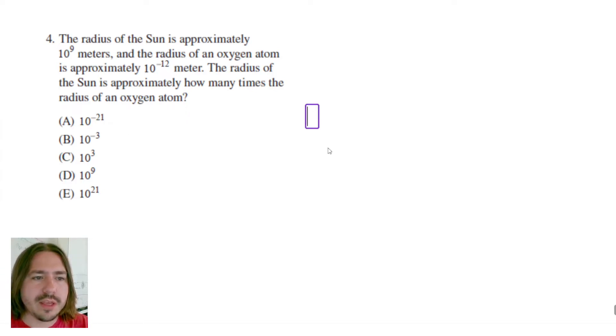So it says that the oxygen atom is 10 to the negative 12th meter, so very very small. It's a very small number. And it says how many times bigger is the Sun than that? Which obviously the Sun is very big.